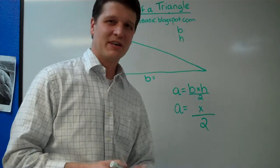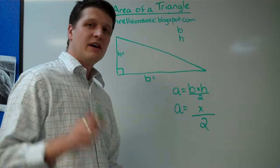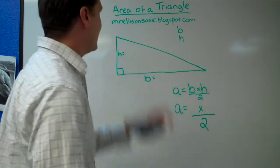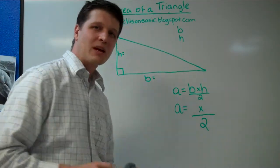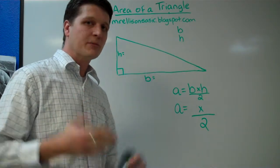Hello, everybody. This is Mr. Ellison again. I'd like to invite you out for another episode of Mr. Ellison's Math Minute. And today we're going to deal with finding the area of a triangle. Now, a triangle is a three-sided figure. It's a polygon.